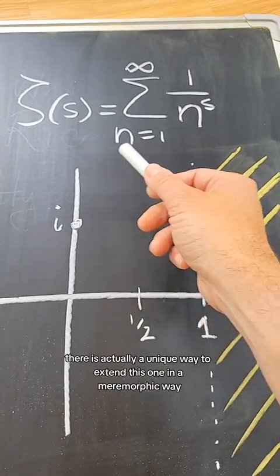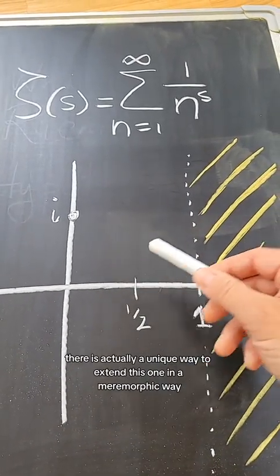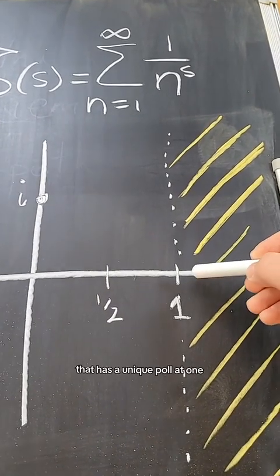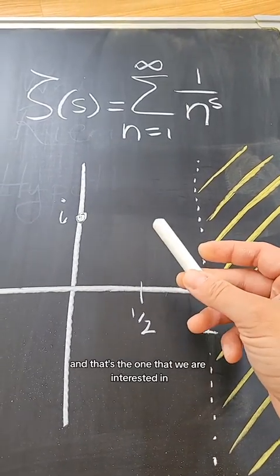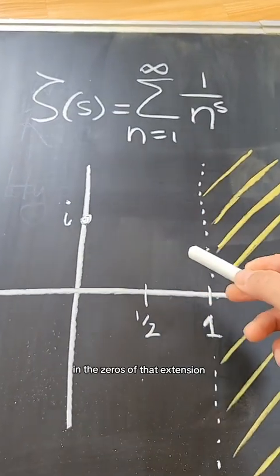there is actually a unique way to extend this one in a meromorphic way that has a unique pole at one. And that's the one that we are interested in, in the zeros of that extension.